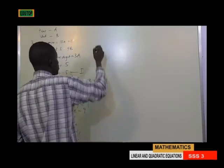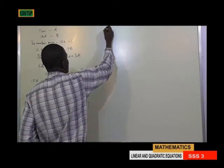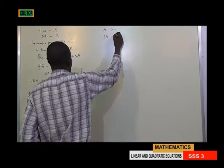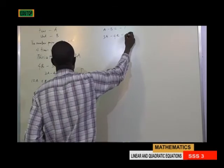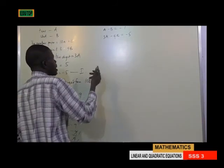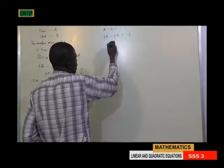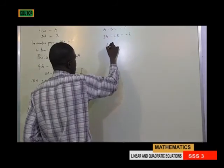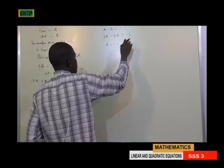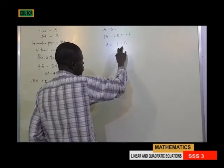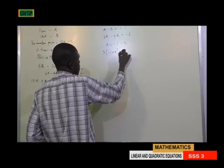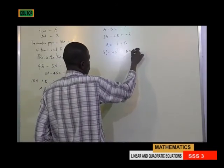Combining both equations: equation 2 is A minus B equals minus 1, and equation 1 is 3A minus 4B equals minus 5. Equation 2 is simpler, so making A the subject gives A equals minus 1 plus B. Substituting into equation 1: 3 times (minus 1 plus B) minus 4B equals minus 5.